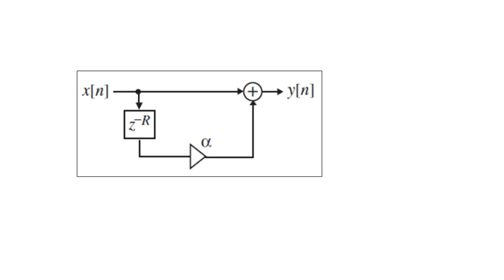The first type is time domain operations. Time domain operations can benefit us for generation of echoes, reverberation, flanging, chorus generation, and phasing, etc. The second category is frequency domain operations, where the use of digital filters and equalizers accomplish the selected task.